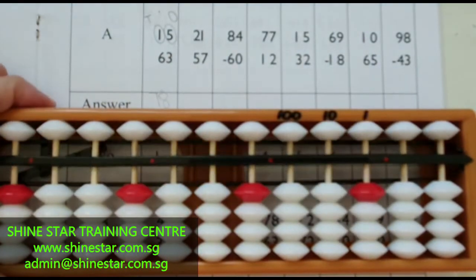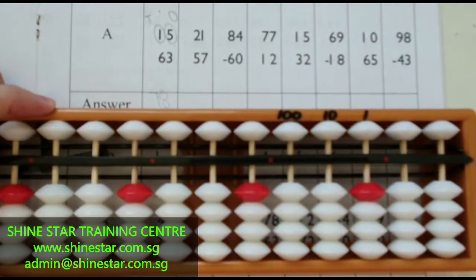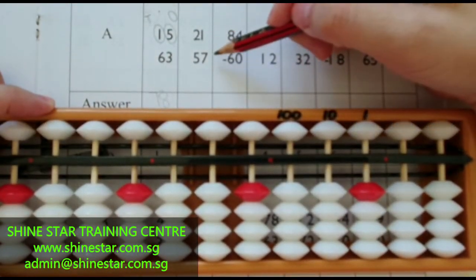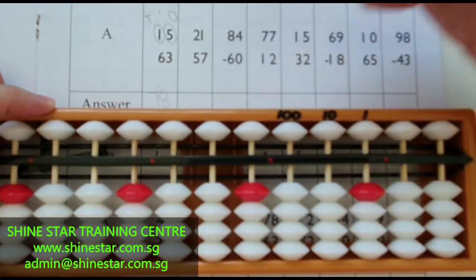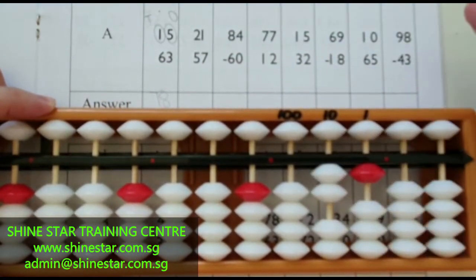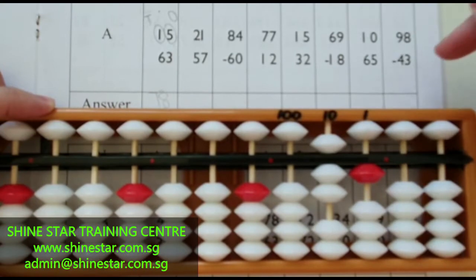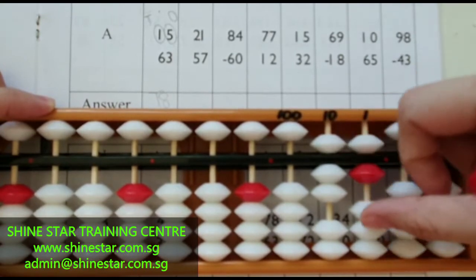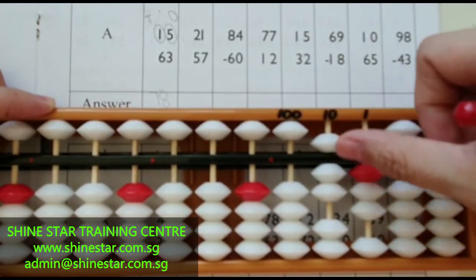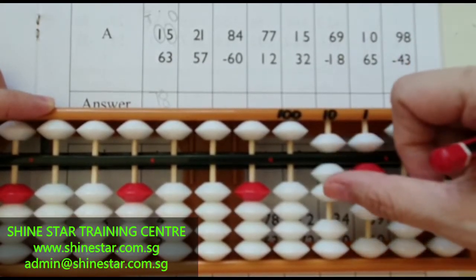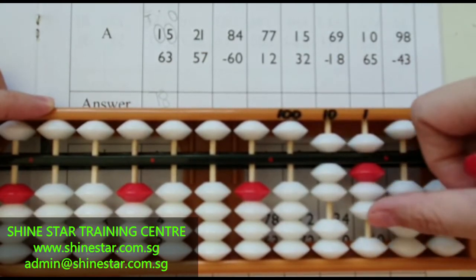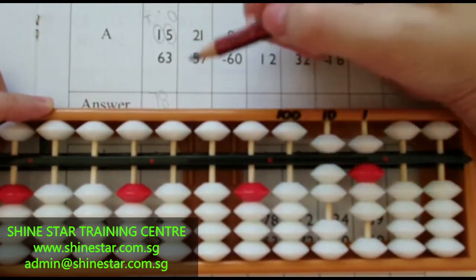Let's clear the abacus. The next question: twenty-one plus fifty-seven. The answer is fifty, sixty, seventy, five, six, seven, eight. Seventy-eight.